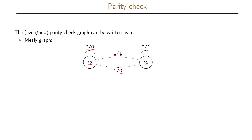What we have given here is the Mealy graph for this problem, and we can see that it is a Mealy graph because the output depends on the input. If we are in S0 and get a 0 as input we output a 0, and if we get a 1 as input we output a 1. Clearly the output depends not only on the state we are in but also on the input, so it is a Mealy graph.